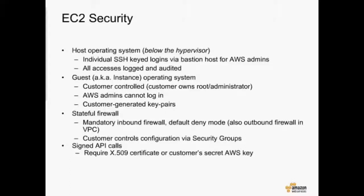All systems come with what we call a security group — it's a mandatory selection when you launch an instance. It acts as an inbound firewall; in VPC, it's inbound and outbound. By default, the security group is deny all, so you have to explicitly go and open specific ports and sources that you want to allow traffic from. These are all controlled and managed by the customers.